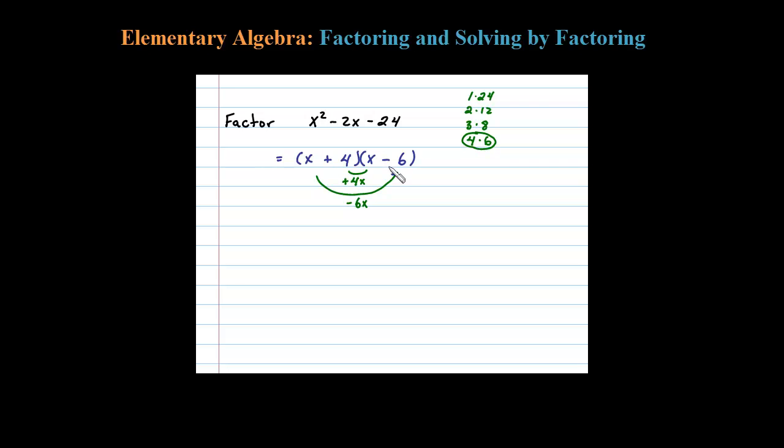Positive 4 times negative 6 is negative 24, so it works. Let's go ahead and check that. You don't have to check every time, but just to show you, we have x plus 4 times x minus 6.